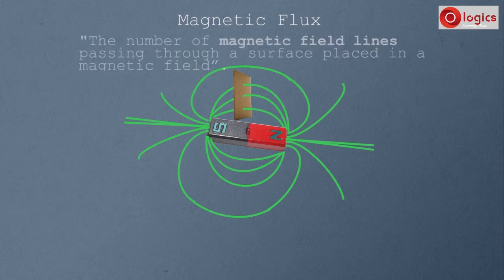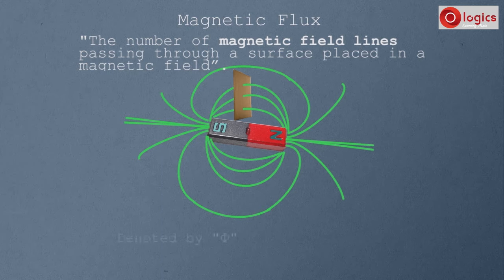Magnetic flux is defined as the number of magnetic field lines passing through a surface placed in a magnetic field. Magnetic flux is denoted by the symbol phi, and is measured in units called Weber.